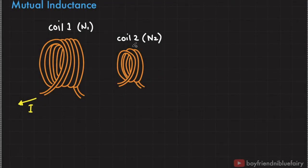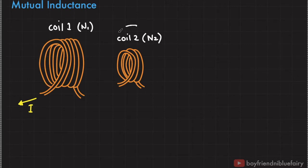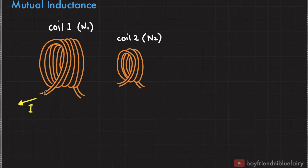Consider these two coils of wire. We name this coil of wire coil 1 and the other coil 2. Coil 1 has N_sub_1 number of turns and coil 2 has N_sub_2 number of turns. Initially there's a current flowing through coil 1 in this direction, and if we use the second right-hand rule it generates a magnetic field in this direction.